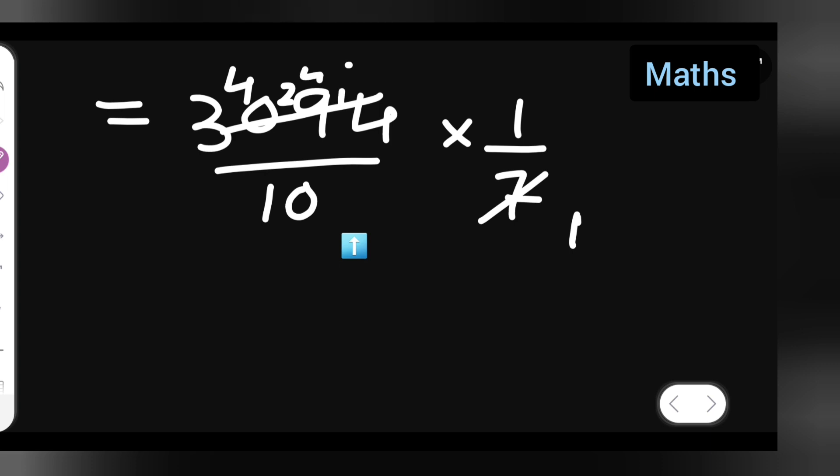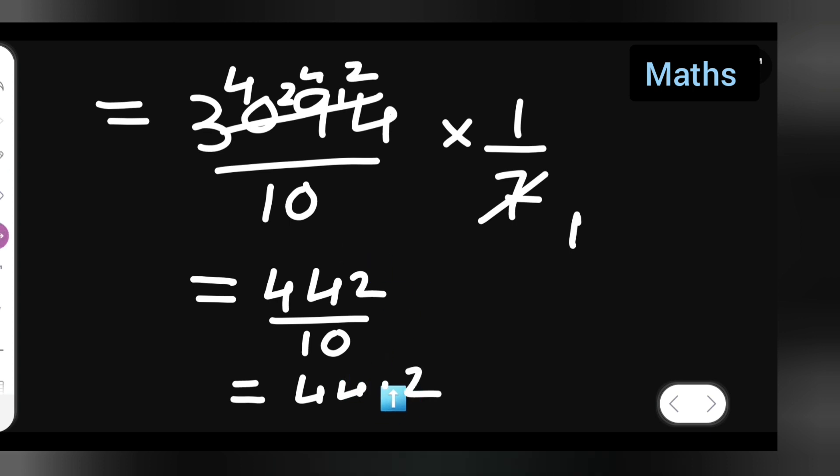Now where does the decimal point come? 442 upon 10 equals 44.2. That's your answer. I hope you have understood how to divide numbers with decimal points.